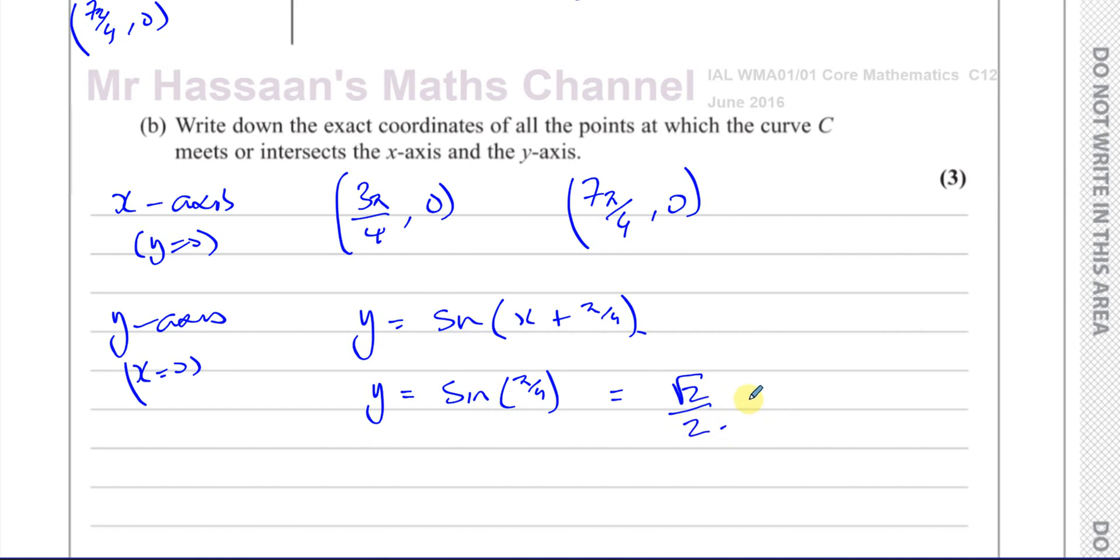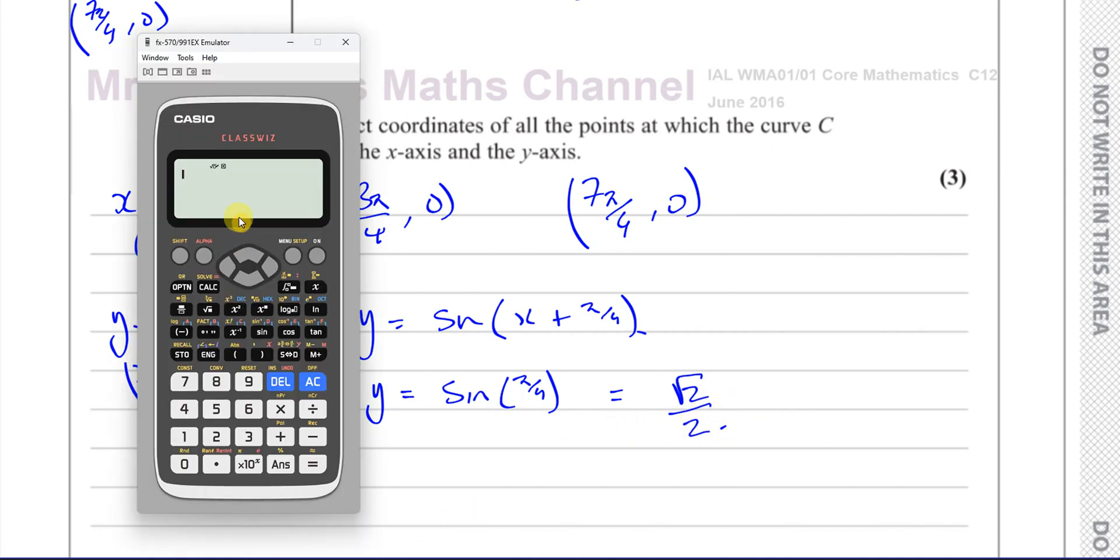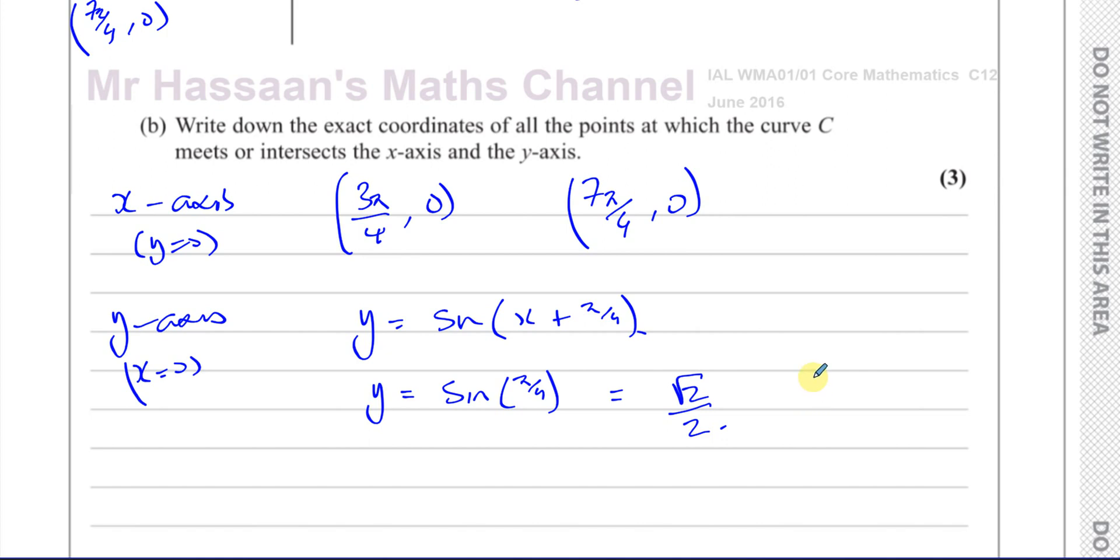If you wanted to just confirm that, make sure your calculator is in radian mode. And you press the sine of pi over 4, and you see it gives you root 2 over 2. So that means the coordinates of the point for the y axis will be 0 and root 2 over 2. It says write down the exact coordinates, so exact means in terms of pi, in terms of surd form. So those are our answers for part B.